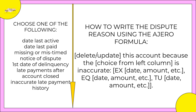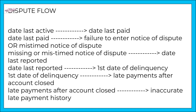The formula is: 'Delete or update this account because [choice from the left column], such as date last active, is inaccurate.' Then you state what it shows — Experian: the date, the amount, etc.; Equifax: date, amount, etc.; TransUnion: date, amount, etc. So it would read like: 'Delete this account because the date last active is inaccurate.'